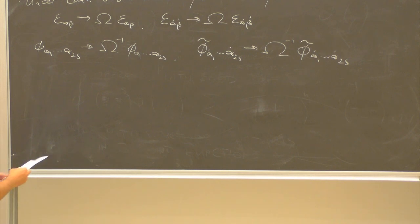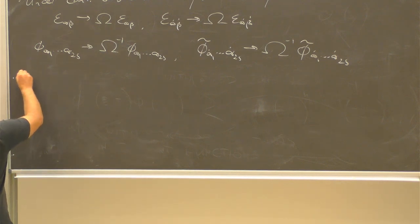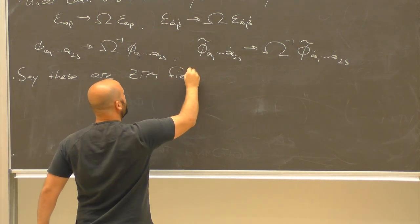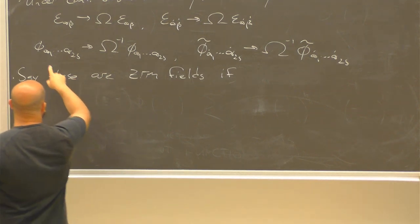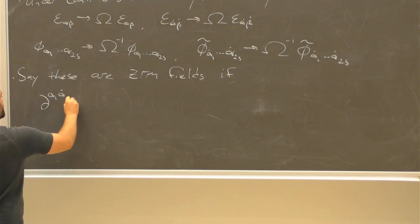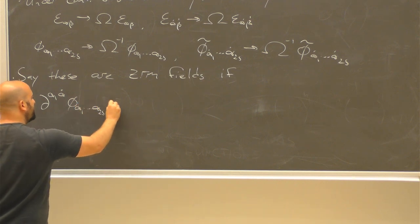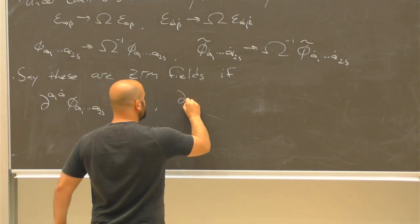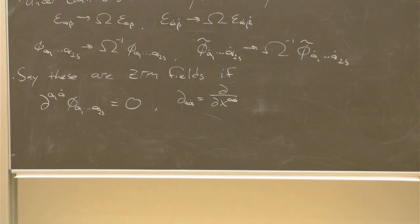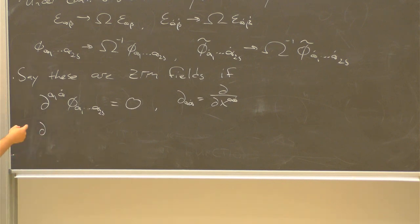We say that these totally symmetric spinor fields are zero rest mass fields if they obey the following partial differential equations. For the undotted symmetric spinor ones: d^{alpha_1 alphadot} phi_{alpha_1...alpha_{2S}} = 0, where d_{alpha alphadot} is just shorthand for d/dx^{alpha alphadot}. So we take a spacetime derivative of the spinor field and contract on one of the undotted spinor indices — it doesn't matter which one because it's totally symmetric. For the dotted ones, we contract on one of the dotted indices instead.